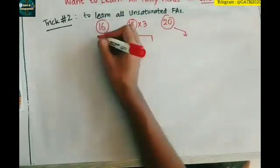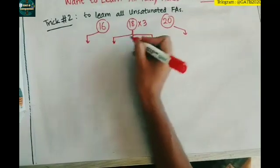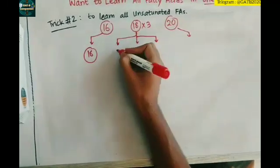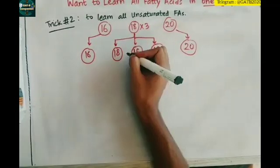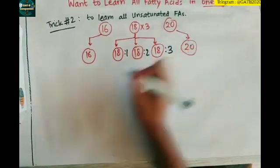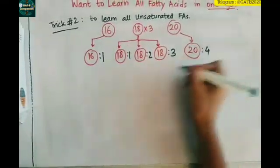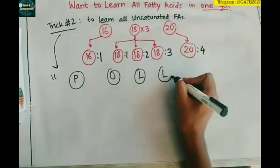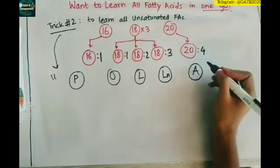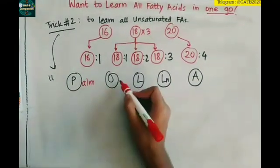Write 16, 18 three times, and 20. Write 16, 18, 18, 18, and 20. For 18 you write 1, 2, and 3. For 16 you write 1, and for 20 you write 4. Now write P O L L A, and tell me what this is.